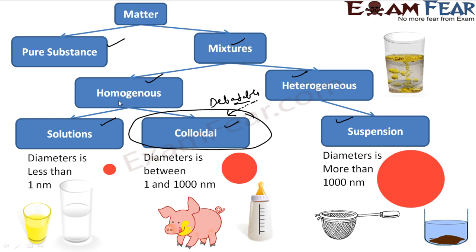As a whole, homogeneous and heterogeneous mixtures can be further classified into three broad categories: solution, colloidal, and suspension. The key factor that differs between these is particle size. In a solution, the particle size — the diameter — is less than one nanometer.